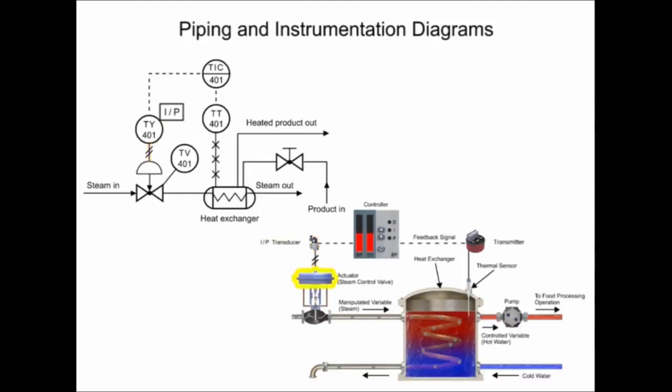The pneumatic controlled diaphragm actuator that opens and closes the globe valve regulates steam in the process. The actuator is represented by the half circle in the P and ID. The arrow pointing downwards from the actuator indicates a fail closed valve type.